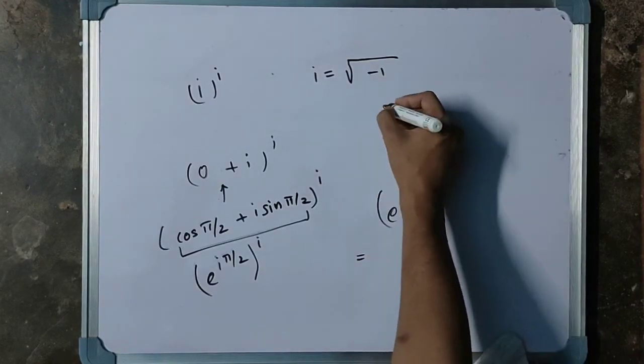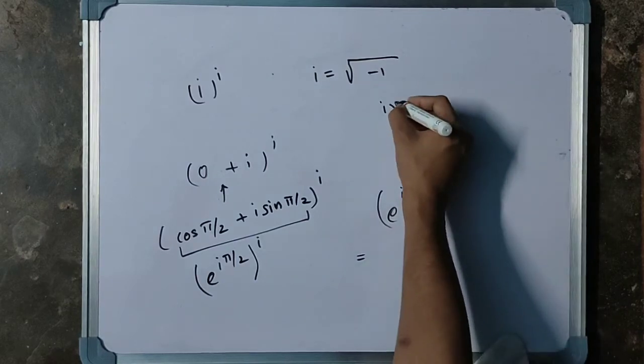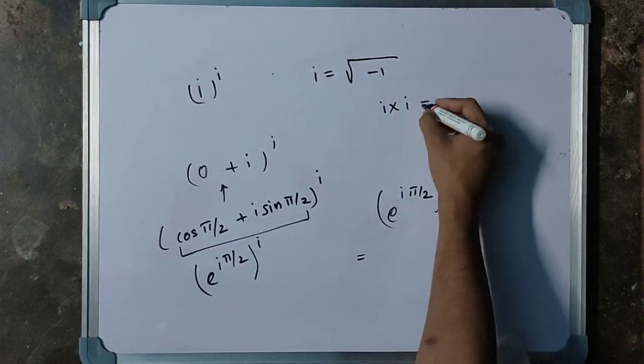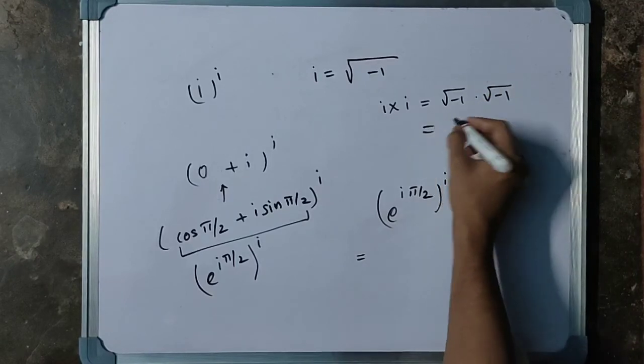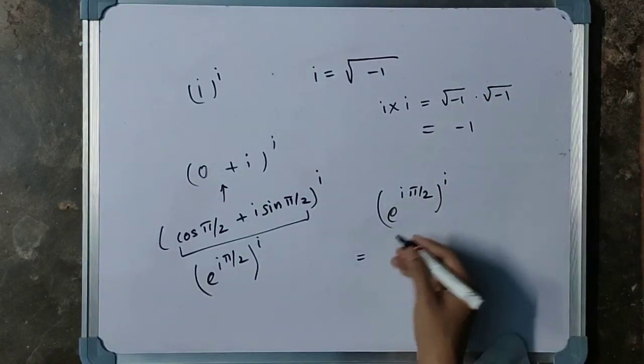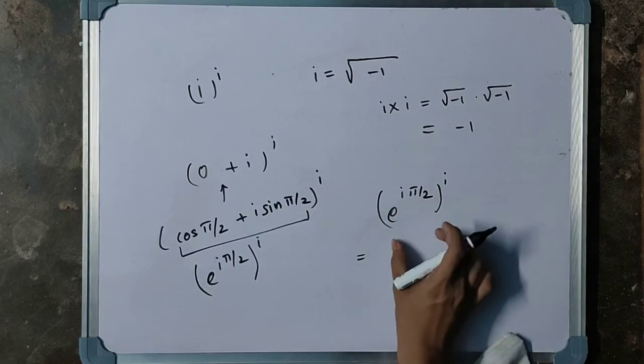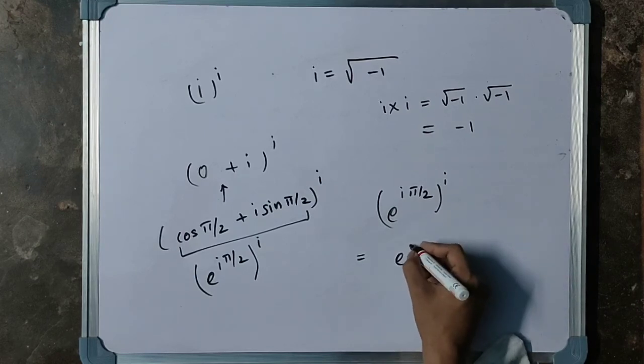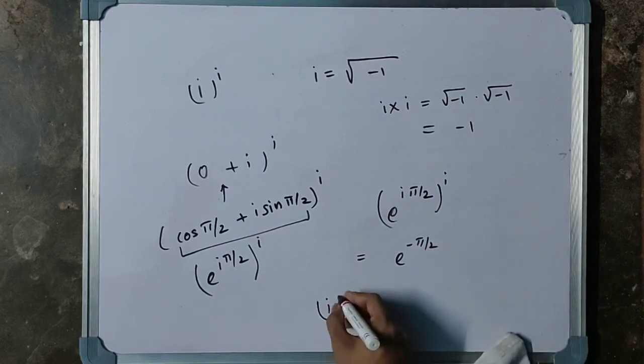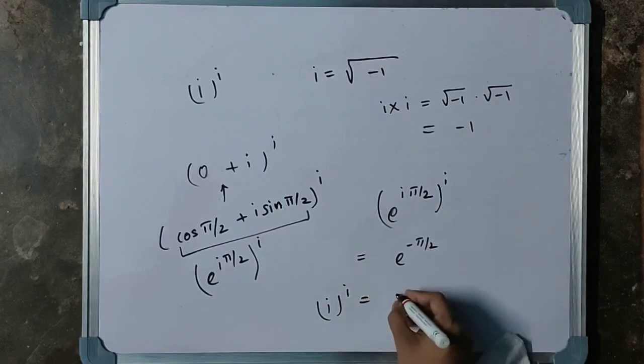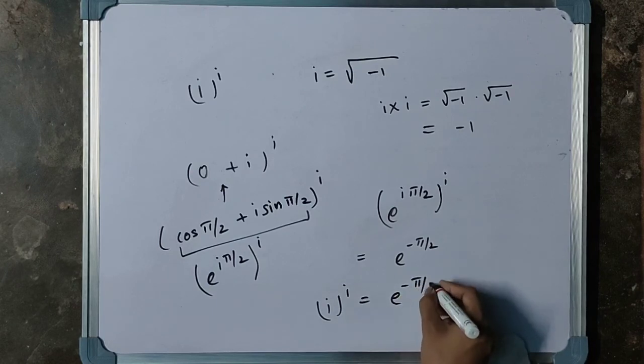i multiplied by i basically means root minus 1 multiplied by root minus 1, which equals minus 1. That means this value becomes e to the power minus π/2. Therefore, i to the power i equals e to the power minus π/2.